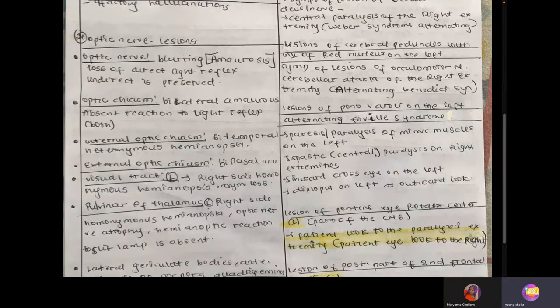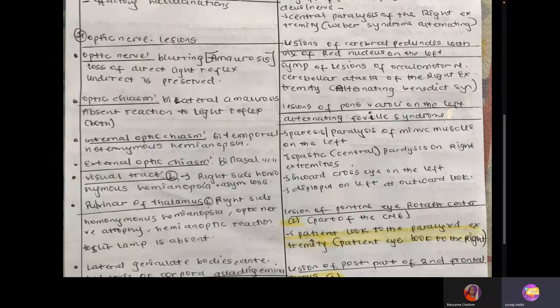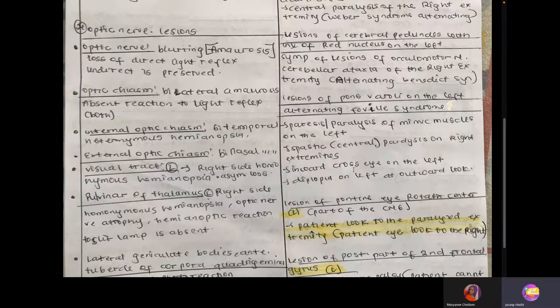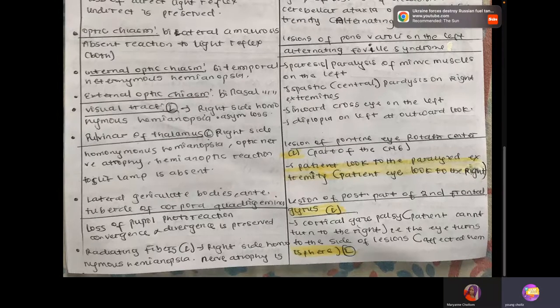Lesion of the pons varolii on the left side: we see paralysis of the mimic muscles on the left — ipsilateral — because it's on the left, so ipsilateral paralysis of the mimic muscles. Central paralysis of the right extremity, so contralateral hemiplegia. Diplopia and inward crossing of the eye on the left. These are also lesions of the pontine eye rotation center, because this part involves cranial nerve 6.